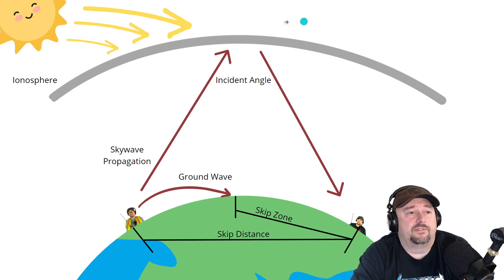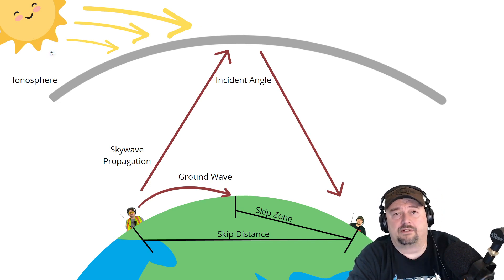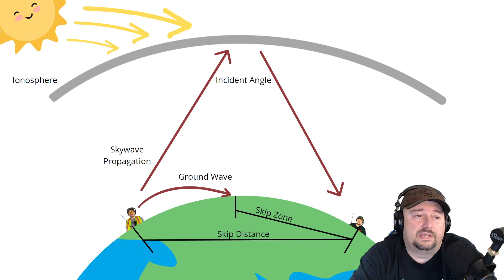So what we have up here in the top corner is the happy sun. And this sun is just spewing stuff at us all day long. It spews particles, radiation, radiated particles. And as this stuff comes towards the Earth, we do have a layer of protection. It's the ionosphere, and that's depicted here with this gray arch.